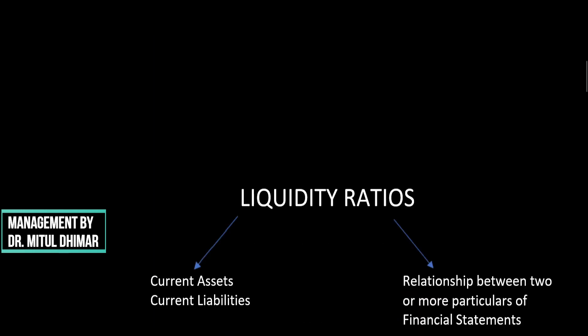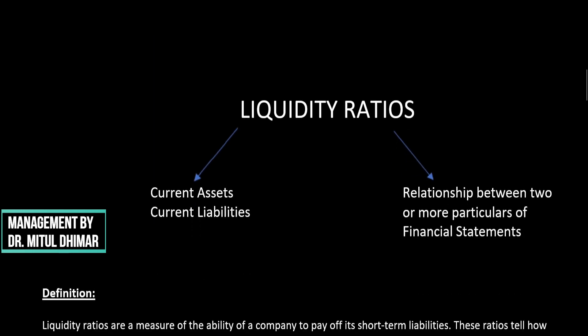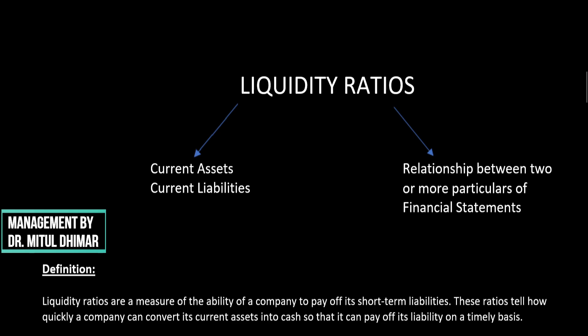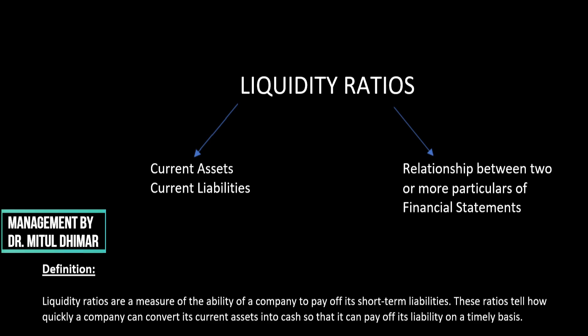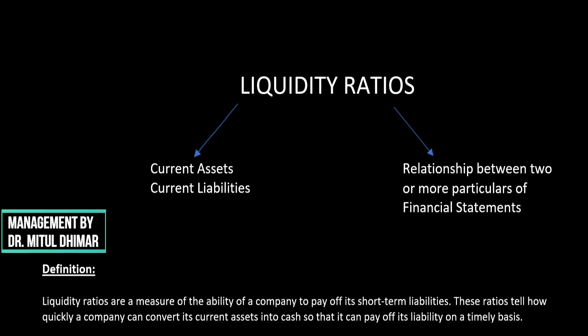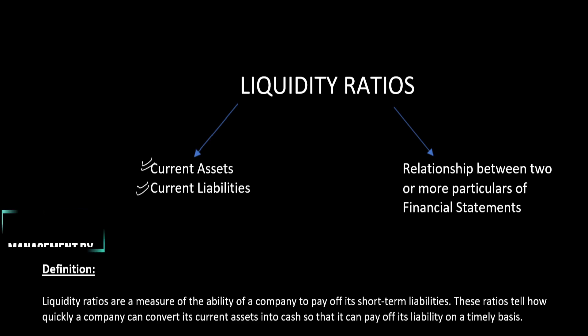So what is a liquidity ratio? The word 'liquid' suggests something that is not fixed or static — something that is moving and not constant. With the word 'ratio' we show the relationship between particulars of our financial statements. So these ratios show the relationship between two items of the balance sheet that are not constant: current assets and current liabilities.